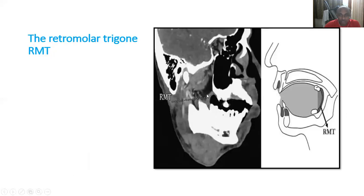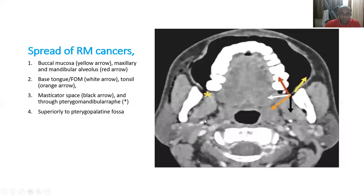Another structure is called the retromolar trigone. The retromolar trigone signifies the area of the oral cavity just posterior to the last molar. You can see the RMT area in graphical pictures, and this is the hard palate junction. If you see any malignancies arising from this area — the pterygomandibular raphe — this is the buccal mucosa with puffed cheek technique. The RMT area can spread adjacent to the buccal mucosa, to the mandible, to the masseter muscle, to the maxilla and pterygoid area, and to the tonsil and tongue.